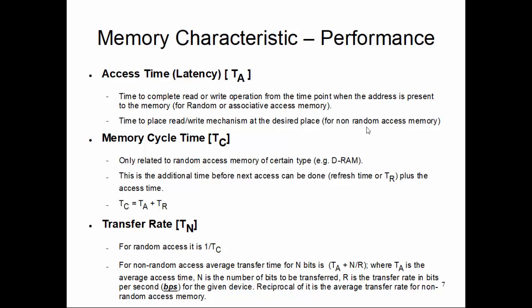Now transfer rate, for random access it is 1 by TC, simple reciprocal of the memory cycle time, where your TR may be zero or non-zero depending on the type of the random access memory. If it is a DRAM there is a refresh time. If it is an SRAM it doesn't have a refresh time. But by definition, transfer rate is what we are kind of interested in, that how many bits per second I can transfer from one storage to whoever is requesting from the storage.